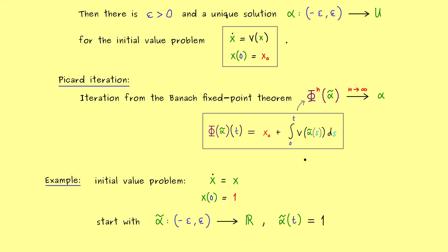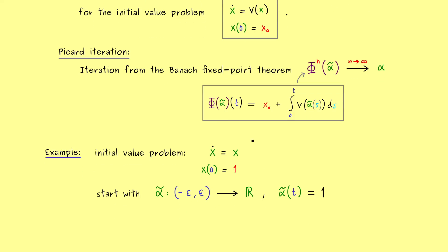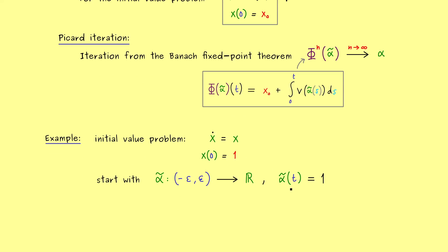Ok, and then in the first step we simply apply phi to this alpha tilde. So we get phi of alpha tilde is equal to 1 plus the integral from 0 to t of alpha tilde. However alpha tilde is constant, it is equal to 1, so this is a really easy integration. Namely the integral is just equal to the length of the interval which is equal to t. Hence the new function that comes out here is 1 plus t.